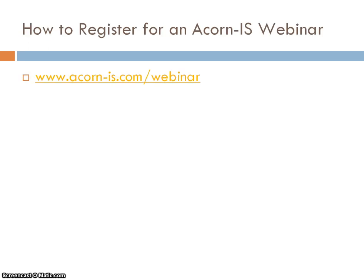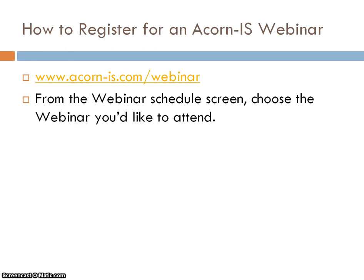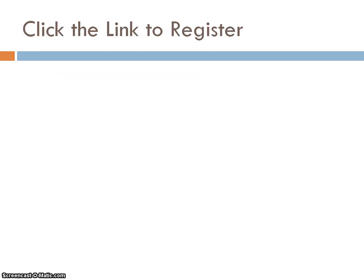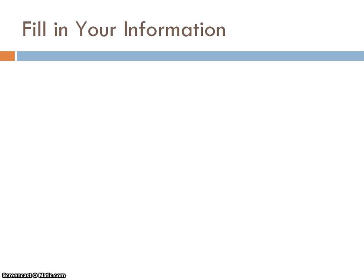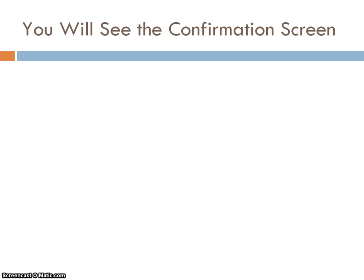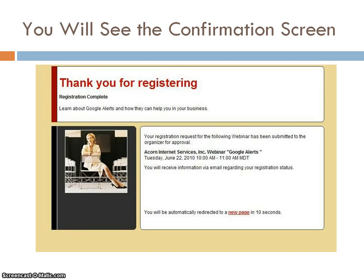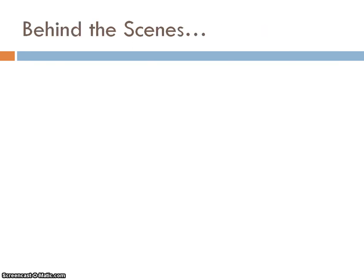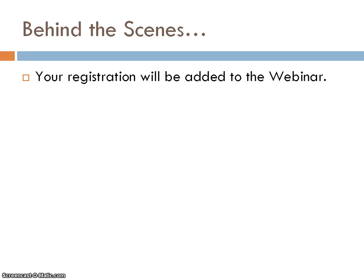How to register for an Acorn IS webinar: go to www.acorn-is.com/webinar. From the webinar schedule screen, choose the webinar you'd like to attend and click the link to register. Fill in your information, then click 'Register Now.' You will see the confirmation screen.